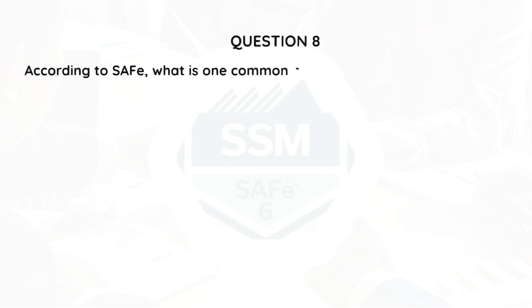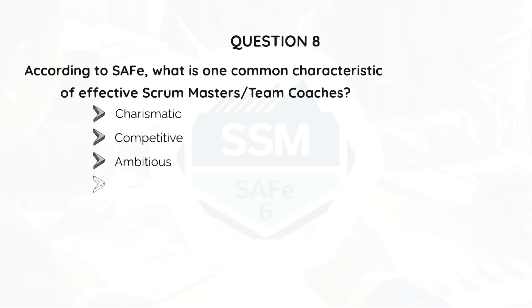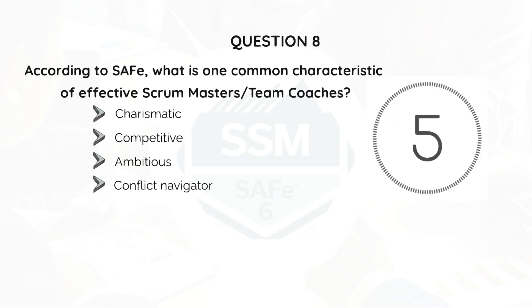Question 8. How does the C in the CALMS approach to deployments? Question 9. What is one common characteristic of effective Scrum Masters or team coaches? Charismatic, competitive, ambitious, or conflict navigator? Choose just one.